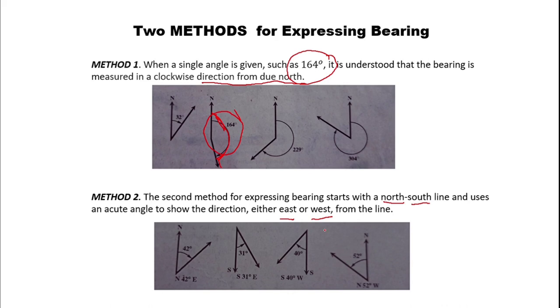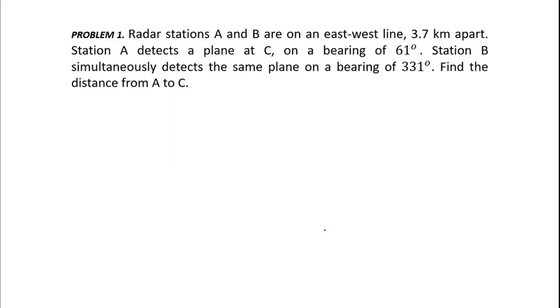Let's start with example number one. Radar stations A and B are on an east-west line 3.7 kilometers apart.